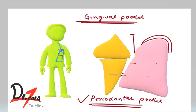In the periodontal pocket, destruction of the supporting periodontal tissue leads to loosening and exfoliation of the teeth — meaning the teeth will become loose and eventually fall out. So the pocket is of two types: gingival pocket and periodontal pocket.